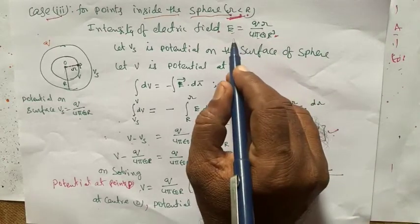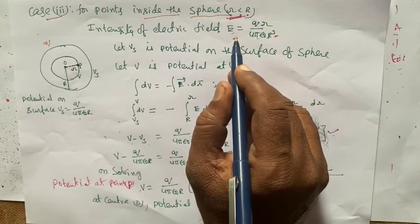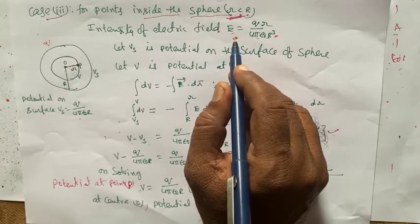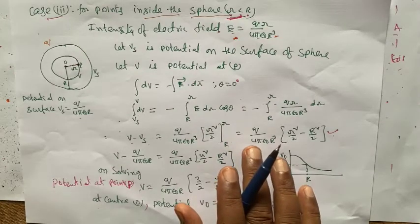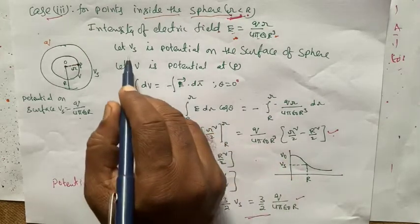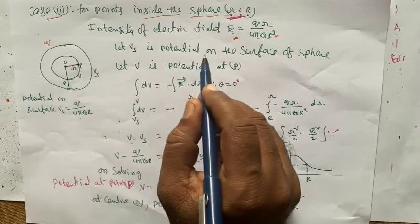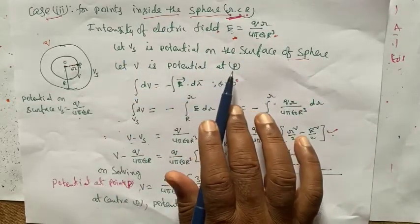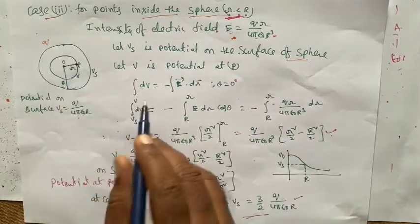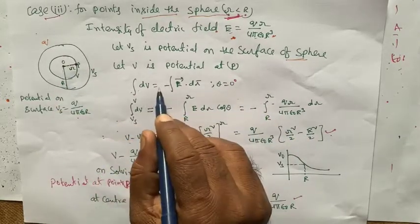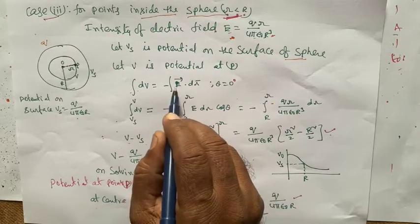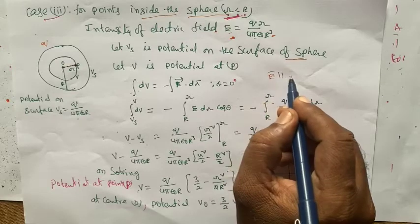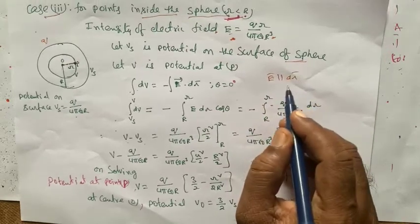How does this equation come? The derivation of this equation is available in the previous chapter. Let Vs be the potential on the surface of the sphere, and V be the potential at point P. Then the integral of dV equals minus of E-bar dot dr-bar, with theta equal to 0, since E-bar is parallel to dr-bar.